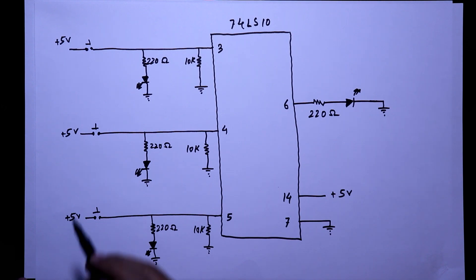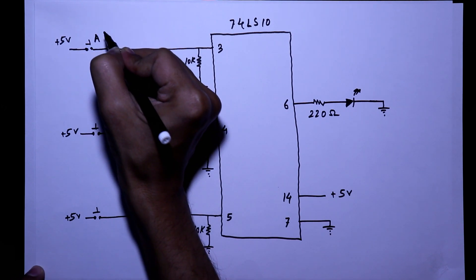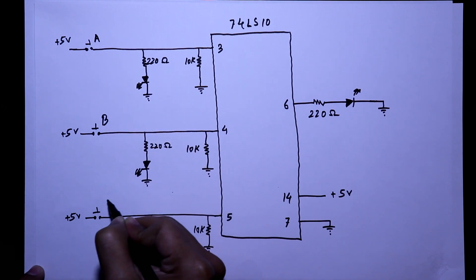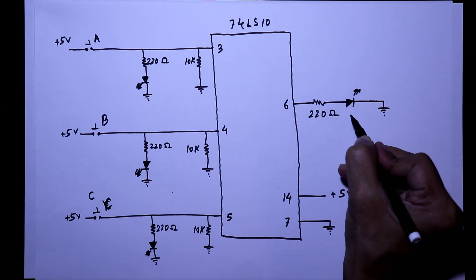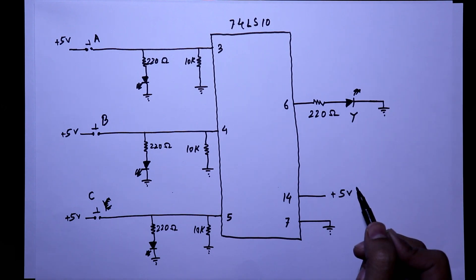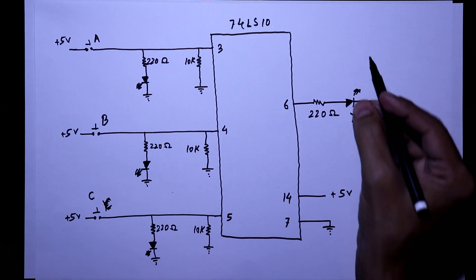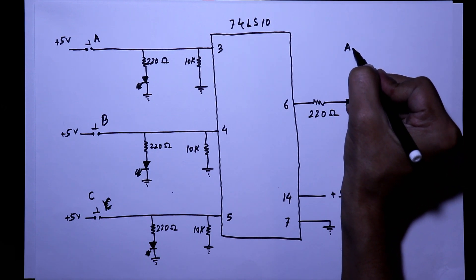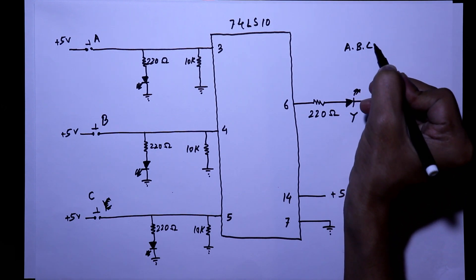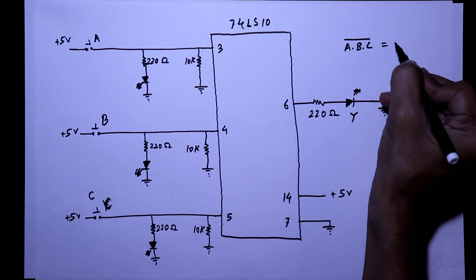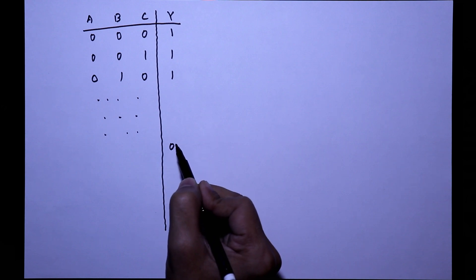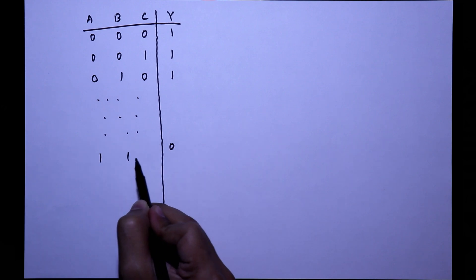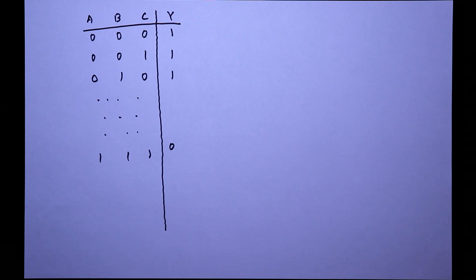So this is the practical circuit. As it is 3 input NAND gate, we are naming it as A, B, and C, and we are naming the output as Y. And we know the equation of NAND gate: it is A dot B dot C whole bar equal to Y. We will get the output as 0 only when all the 3 inputs will be 1. So we will verify this thing in practical.